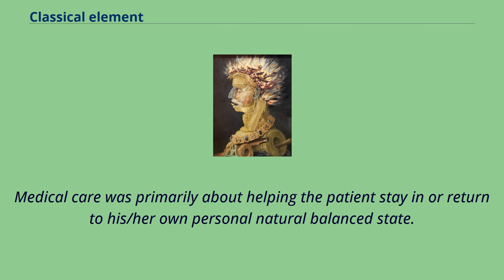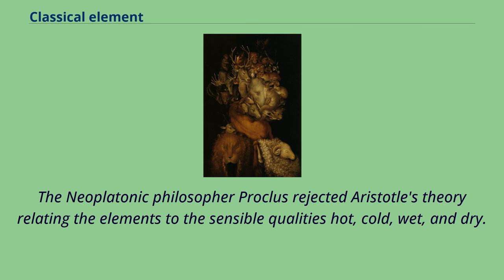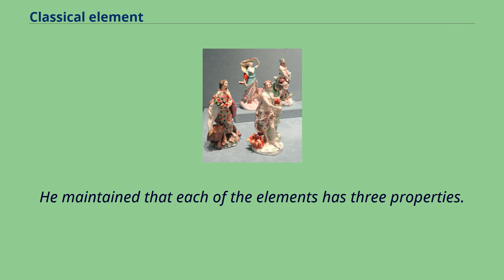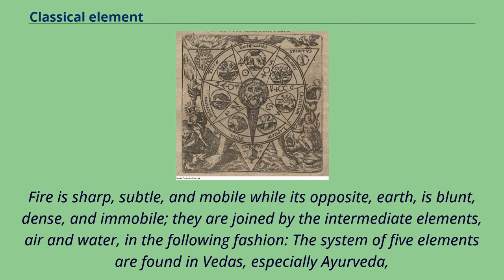The Neoplatonic philosopher Proclus rejected Aristotle's theory relating the elements to the sensible qualities hot, cold, wet, and dry. He maintained that each of the elements has three properties. Fire is sharp, subtle, and mobile while its opposite, earth, is blunt, dense, and immobile. They are joined by the intermediate elements, air and water, in the following fashion.